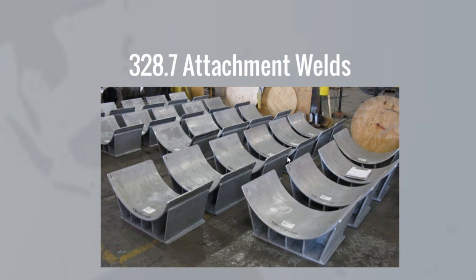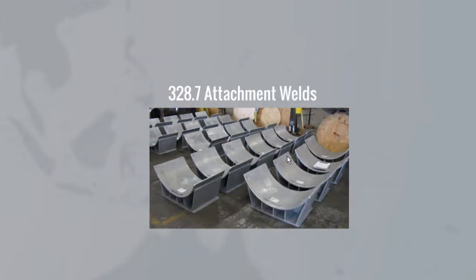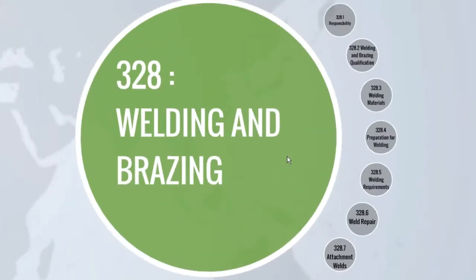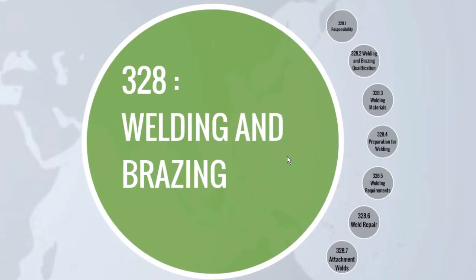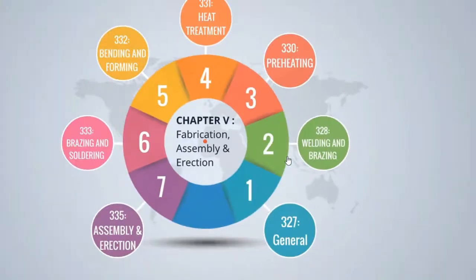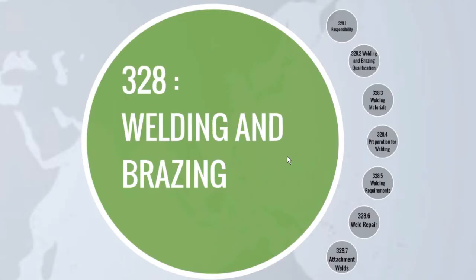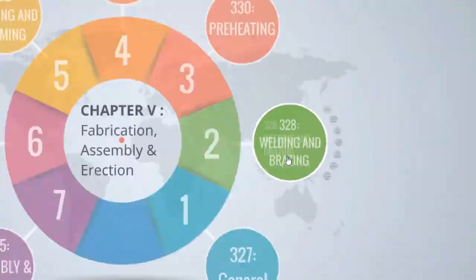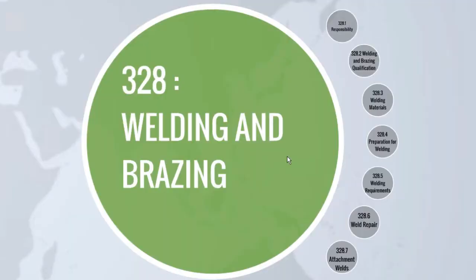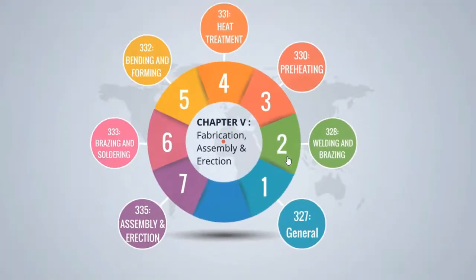With these paragraphs on welding and brazing, that is para 328, ends. As stated earlier, currently there isn't any paragraph as para 329 in Chapter 5 of ASME B31.3 Process Piping Code, 2016 Edition.